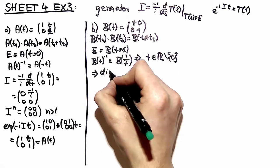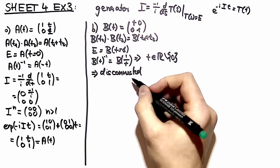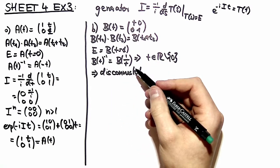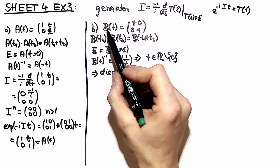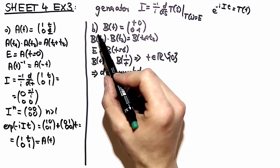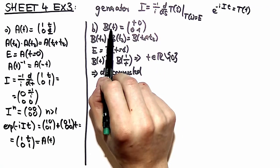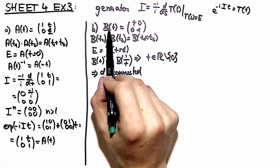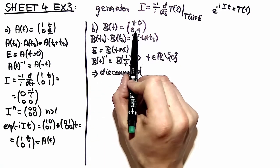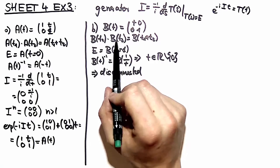Now you can conclude that this group is disconnected. It's disconnected because it's not possible to connect those elements b of t with t greater than 0 with those of where t is smaller than 0 with a path lying in the parameter space. Or in other words you have here matrices with a determinant plus or minus 1 and they can't be connected.